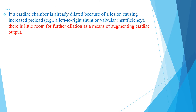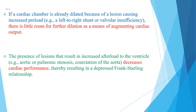If a cardiac chamber is already dilated because of lesions causing increased preload, such as left-to-right shunt or valvular insufficiency, there is little room for further dilation as a means of augmenting cardiac output. The presence of lesions that result in increased afterload to the ventricle, such as aortic or pulmonary stenosis or coarctation of the aorta, decreases cardiac performance, thereby resulting in a depressed Frank-Starling relationship.